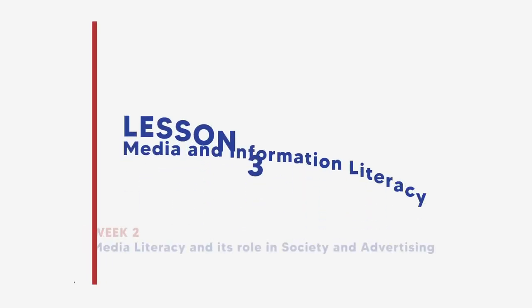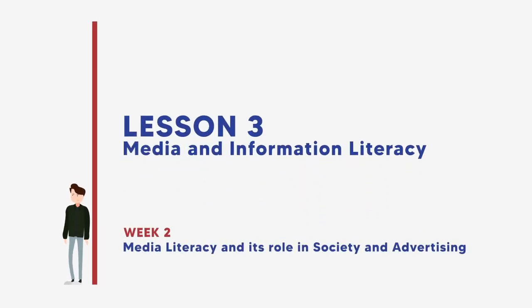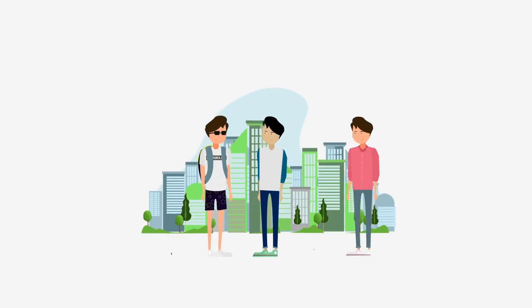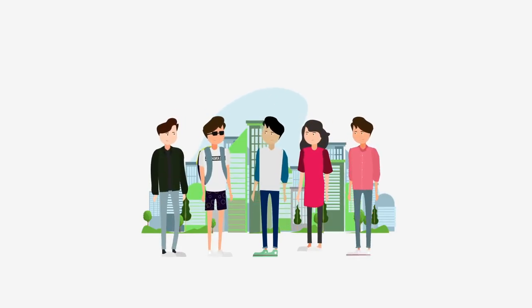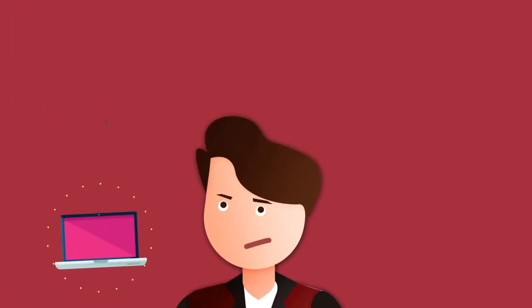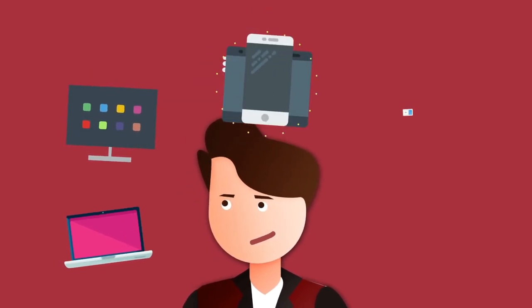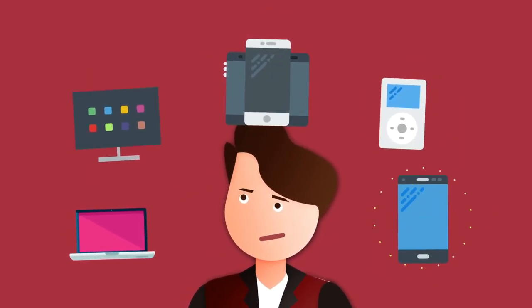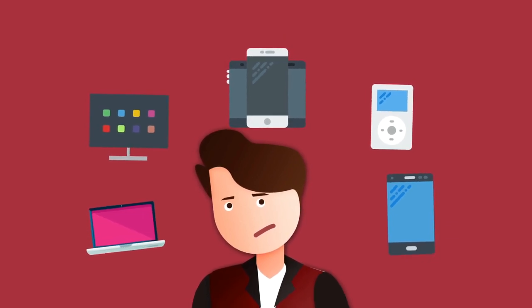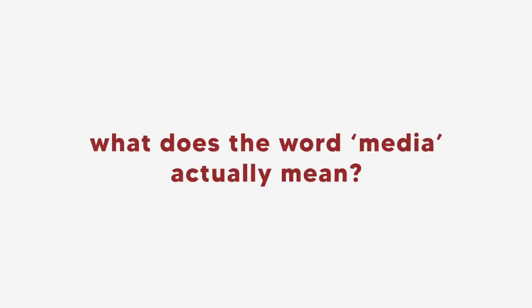Welcome to lesson number three in MIL — Media Literacy and Its Role in Society and Advertising. Being media and information literate is a 21st century skill that we as individuals must be able to possess. Engaging ourselves in a technologically driven society requires familiarity with these two domains to be able to express ideas and messages to other people in an ethical way. People receive media differently because of various reasons and motives.